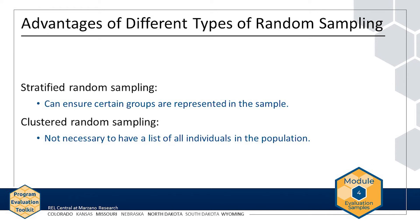You can use stratified random sampling to ensure that certain groups are represented in the sample. For instance, suppose only 0.1% of students in a school district identify as American Indian. A simple random sample of 100 students would not likely include any American Indian students. Stratifying by student racial-ethnic background can ensure that American Indian students are included in the sample.